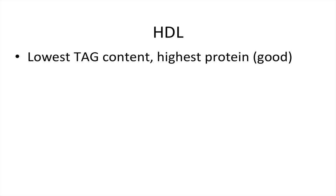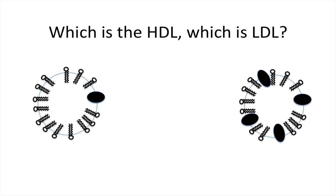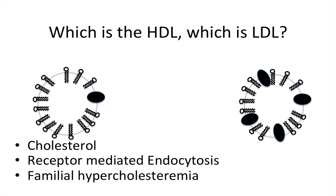HDLs are good — think H for 'happy.' They have the lowest TAG content and the highest protein. Looking at the image, the one on the left is the LDL. Key things to remember about LDL: it delivers cholesterol, it uses receptor-mediated endocytosis, and a deficiency in LDL receptors causes familial hypercholesterolemia.